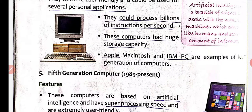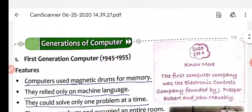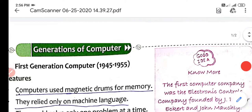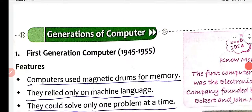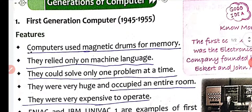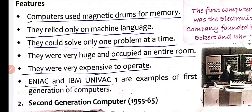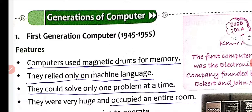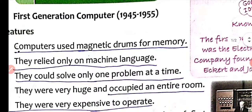First generation computer features: they used vacuum tubes, and used magnetic drums for memory. They relied only on machine language and could solve only one problem at a time. They were very huge and occupied an entire room, and were very expensive to operate. ENIAC and IBM UNIVAC 1 are examples of first generation computers.